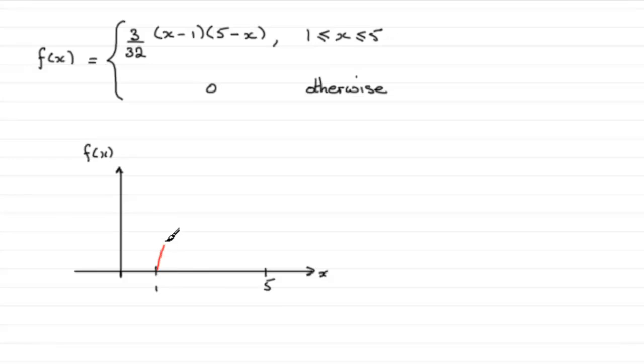I'm going to come up like this, up to the vertex at 3, and then drop back down to the 5. And we're told that it's 0 otherwise, so I would want to do that.